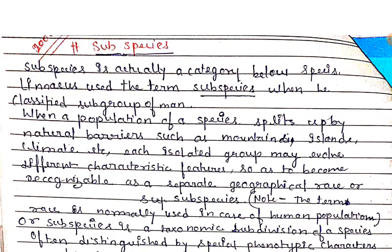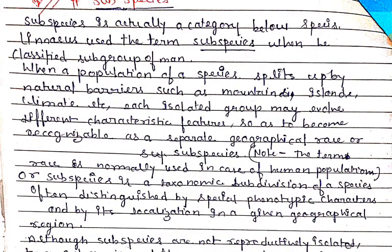When a population of a species splits up by natural barriers such as mountains, islands, climate, etc., each isolated group may evolve different characteristics and features. So as they become recognizable as a separate geographical race or sub-species. Basically, what happens when these physical barriers like mountains separate the species is that they form distinct sub-species.